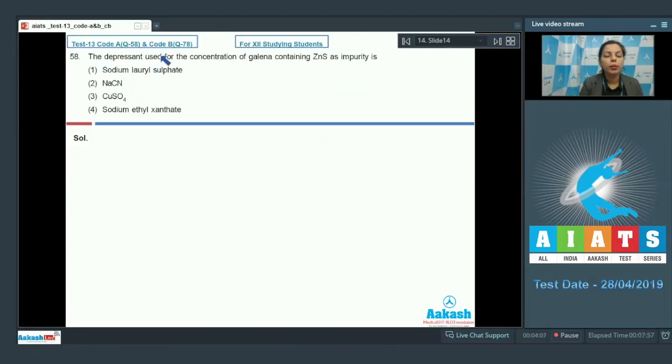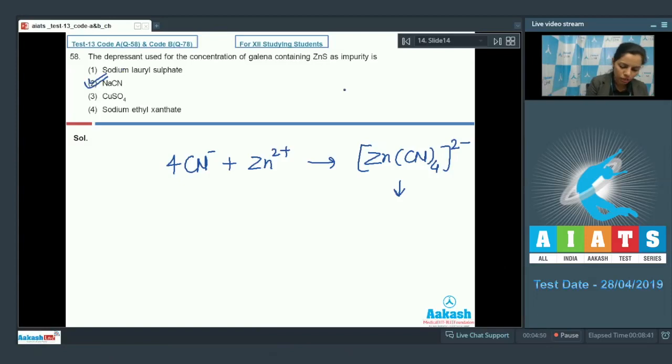After this, the depressant used for concentration of galena containing ZnS as impurity is. If I talk about the concentration of galena, zinc sulfide is present there as the impurity. Then, generally, we use the depressant NaCN. This NaCN combined with zinc, it forms complex ion. And this gets separated during the process of concentration. So, that is why option 2 becomes the correct answer.